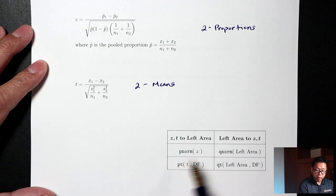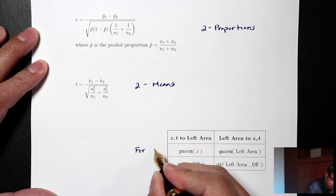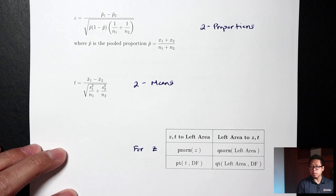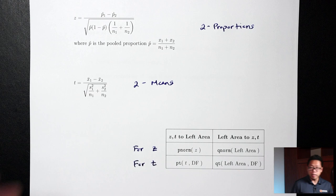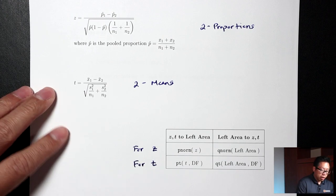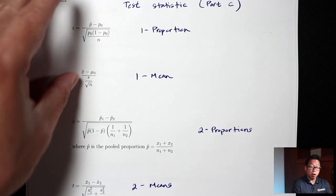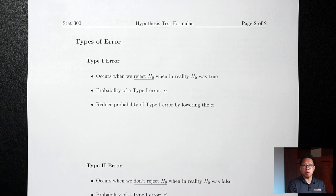The first row — pnorm, qnorm — is for Z's. Z's go with proportions, both the one-proportion and two-proportions situations. The second row — pt, qt — is for T's, and T's are for means. The second page talks about types of error; we'll come back to that when we need it.